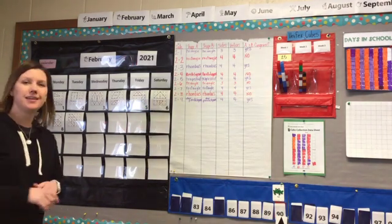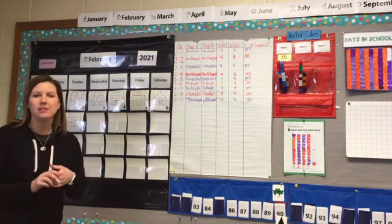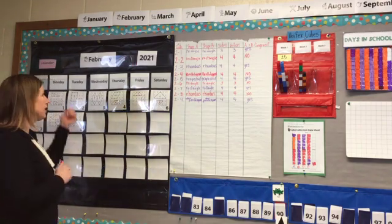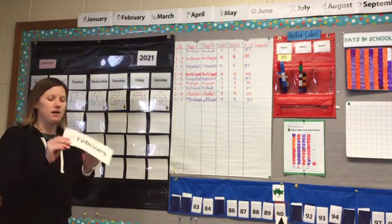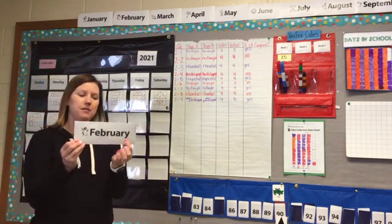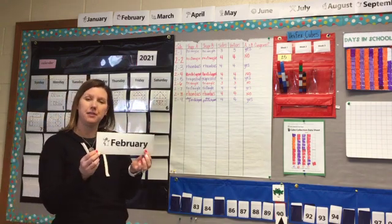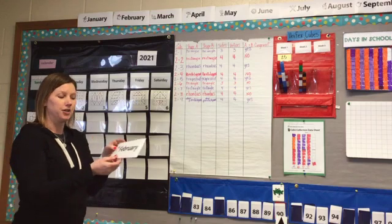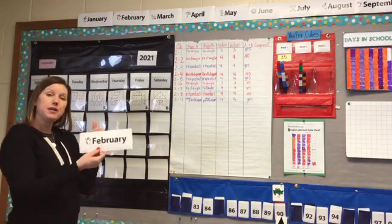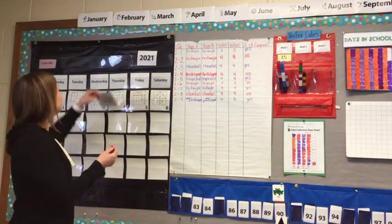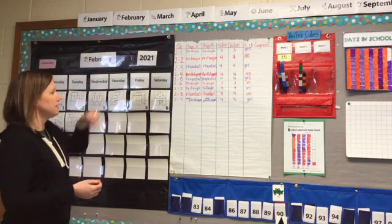Hi boys and girls! It's time for Number Corner. So let's take a look at our February calendar. We are in the month of February. February is the second month of the year, and that is why we write a 2 on our digital date because it's the second month.